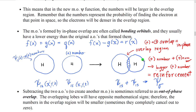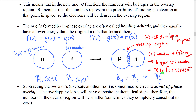We created a new psi function, which we call psi sigma — using the Greek letter sigma. We call this a sigma bond. The electron density is higher between the nuclei, which is consistent with the picture of a covalent bond.